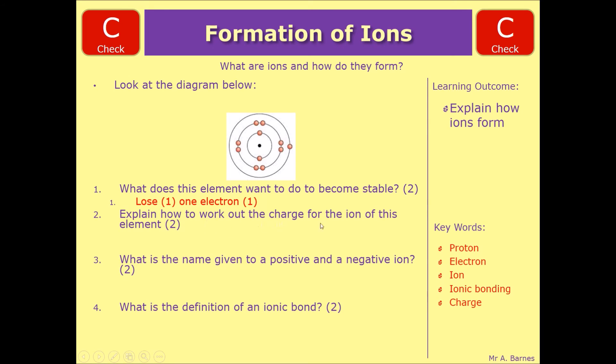Part two. Explain how to work out the charge for the ions of this element. So if it's losing one electron, what is the charge for an electron? Negative. So you get one mark for saying losing one negative electron. Giving it a positive charge overall is your second mark.